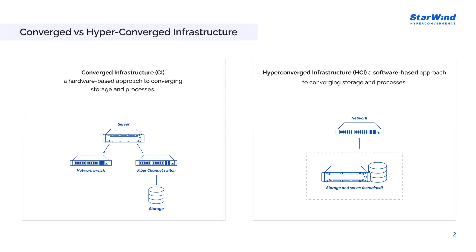Converged Infrastructure is a hardware-based approach that brings together compute, storage, and networking components into a pre-engineered system. This simplifies deployment and management. It includes servers, storage arrays, networking equipment, and management software designed to work together seamlessly. The goal of converged infrastructure is to make deployment easier, streamline management, and improve overall efficiency by consolidating components into a single, more unified and integrated infrastructure environment.